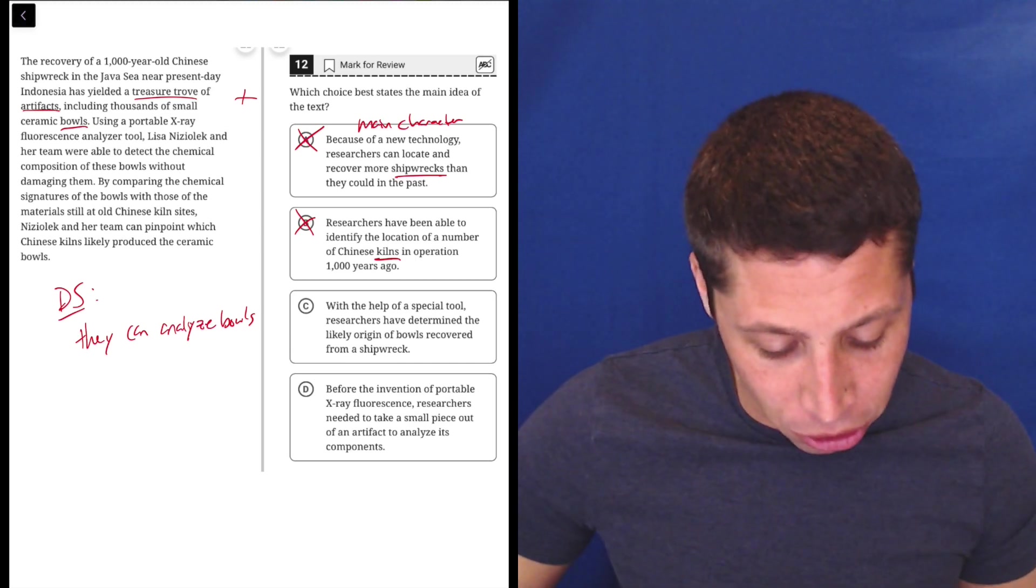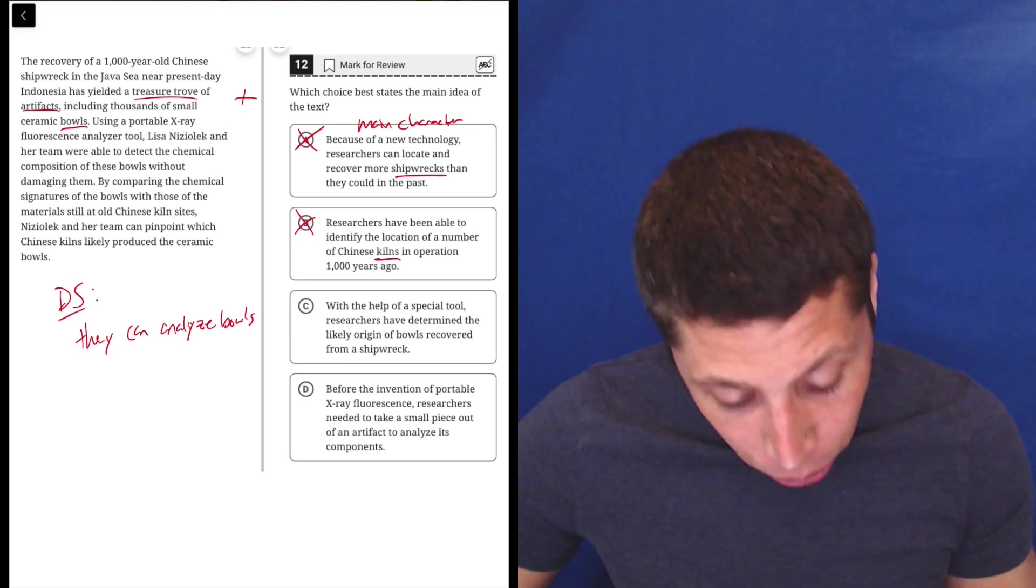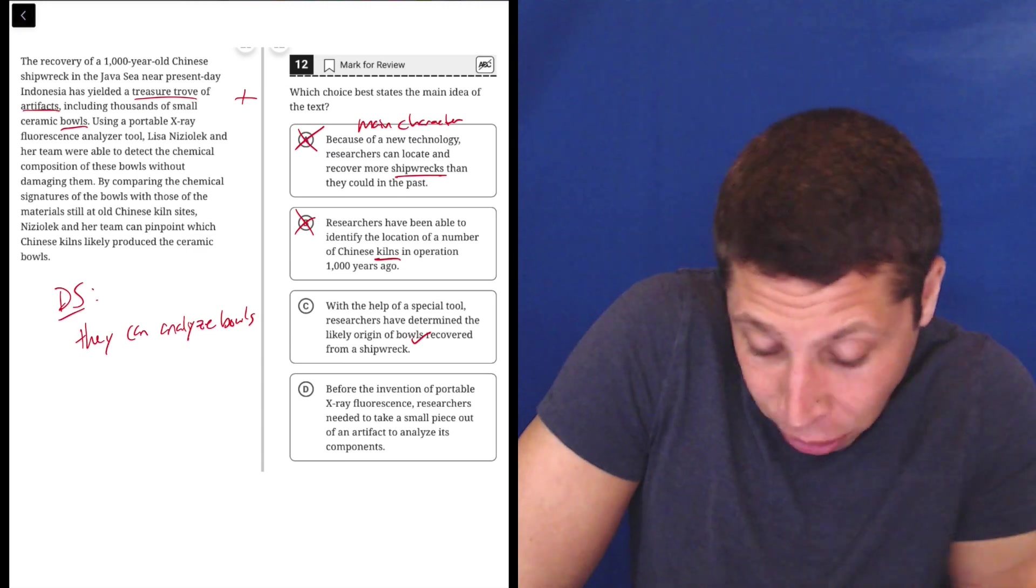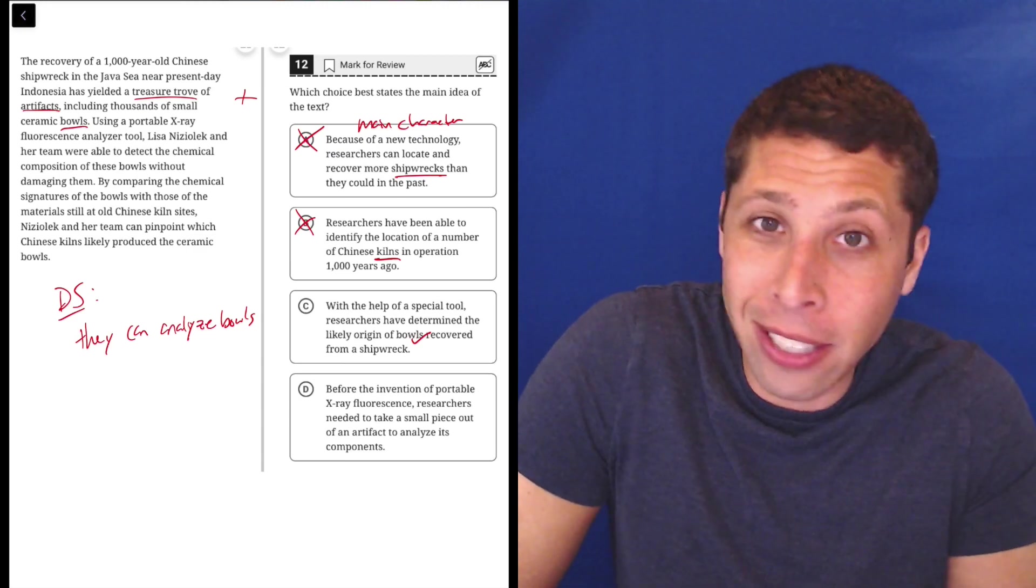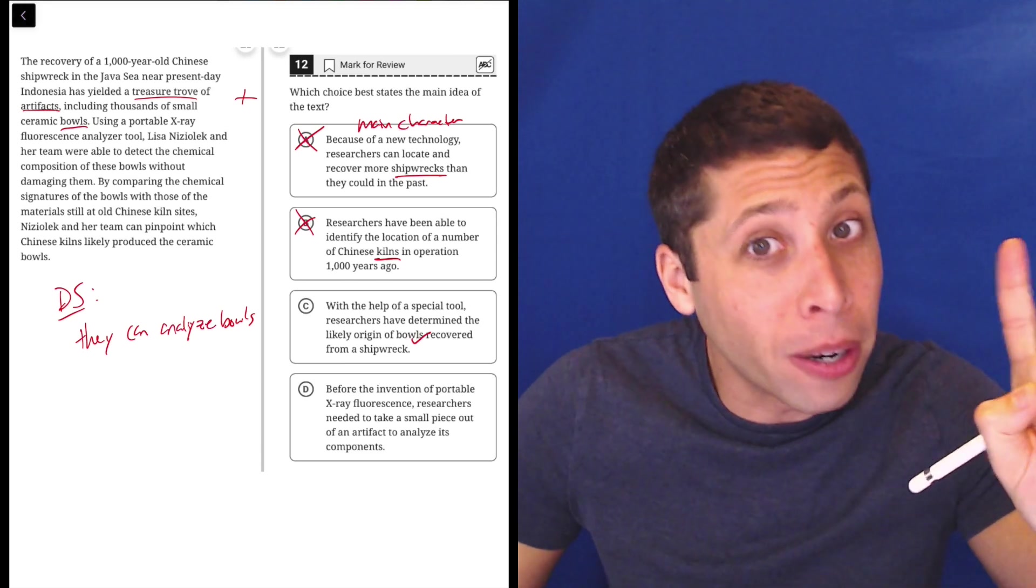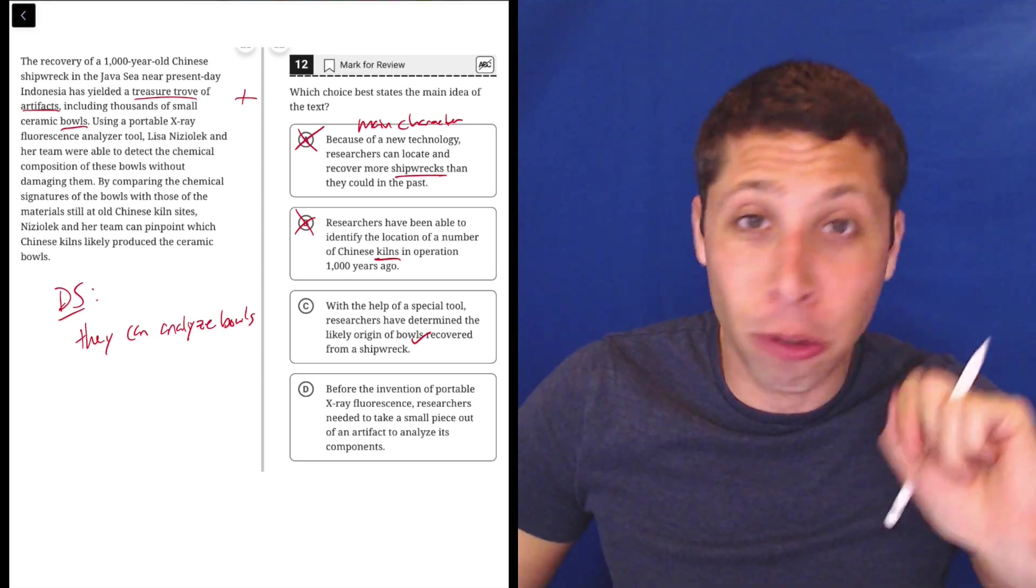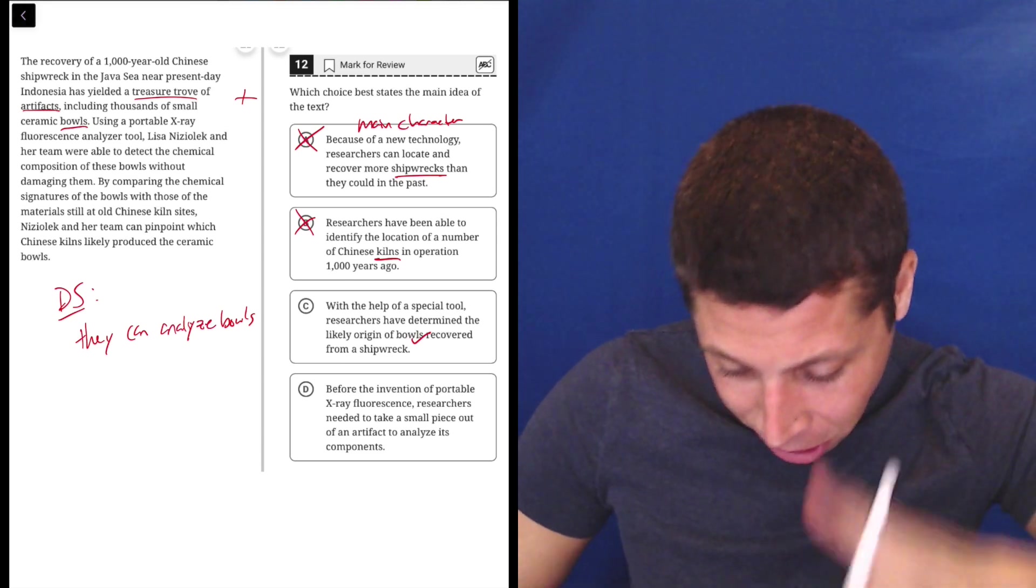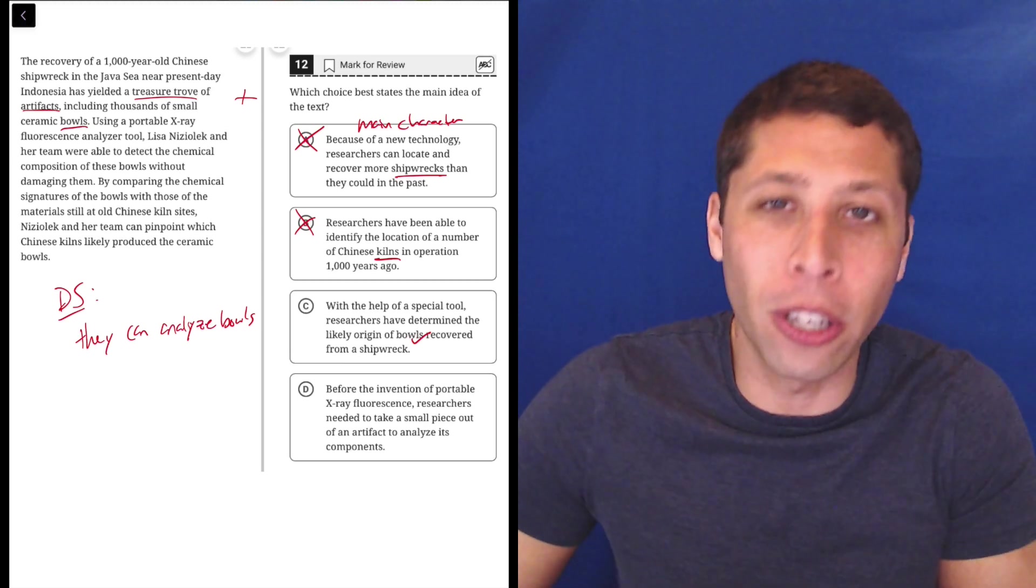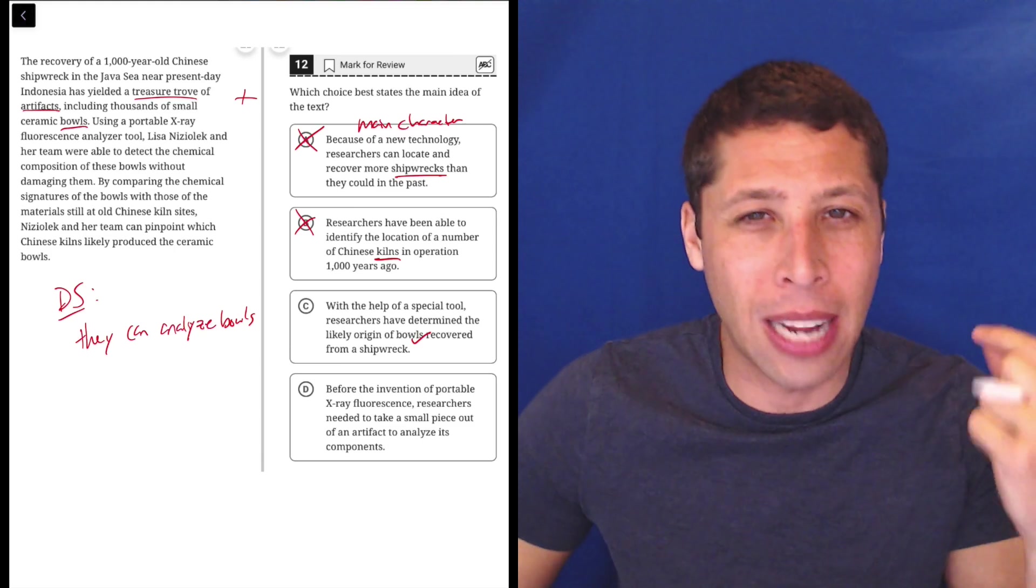C, with the help of a special tool, researchers have determined the likely origin of bowls recovered from a shipwreck. Yeah. I noticed the special tool was some x-ray machine. I didn't care about that when I was reading it. I knew that they weren't going to be like, okay, you got to remember the specific name of the x-ray machine and the fluorescence or whatever it's called. I knew it wasn't going to matter. If it came up again, I could just go look back.